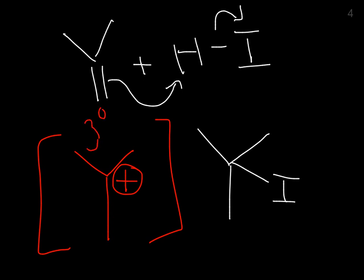You would end up with this tertiary carbocation intermediate. Tertiary carbocations are more stable than secondary, which are more stable than primary, and you're not ever going to see a methyl carbocation. That's just too unstable. So then the iodine is going to come in, attack that carbocation, and you get your product.